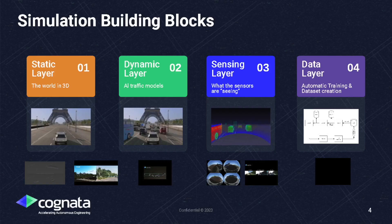So we have the static world with agents driving inside it in a natural manner. The third layer — and this is where it becomes interesting for our webinar — is the sensing layer. We now need to render the world in different sensing modalities like cameras, lidars, radars, ultrasonic sensors, and thermal sensors, and for that we have the sensing layer which uses synthetic rendering.